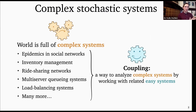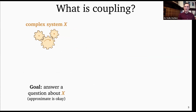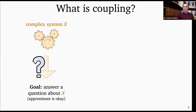You may have heard of coupling in stochastic processes before — that's going to be part of what we're talking about, but we're going to take an even slightly broader view. So what is coupling? If you've got some complex system that you're trying to answer a question about, and maybe your system is complex enough that you're okay with an approximate answer, coupling is when it's really difficult to attack this question directly, so instead of attacking it directly, you go via an easy system.